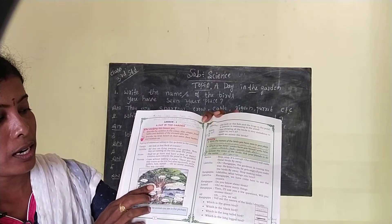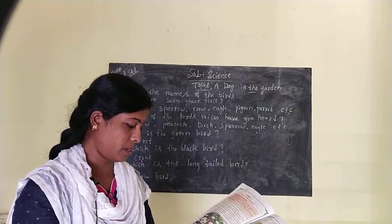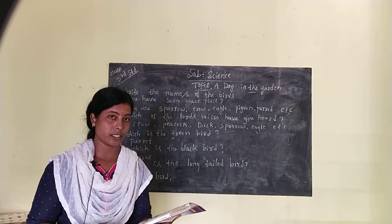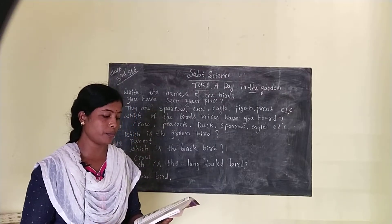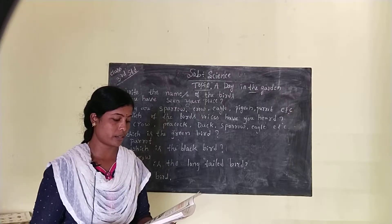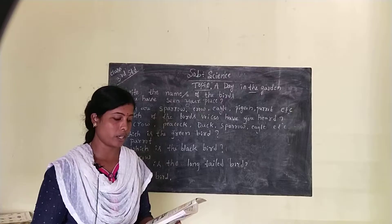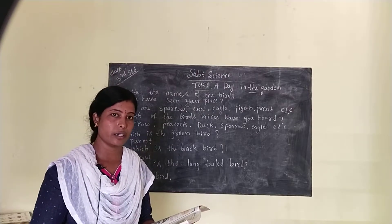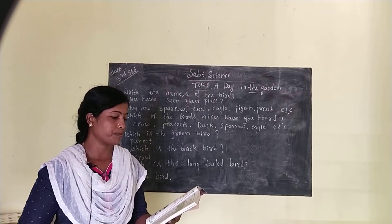Likita said: 'Oh, look at the fish and the frogs in the pond! A tortoise is swimming in the pond.' Fish live in water only, but the frog and the tortoise live in water as well as on land.